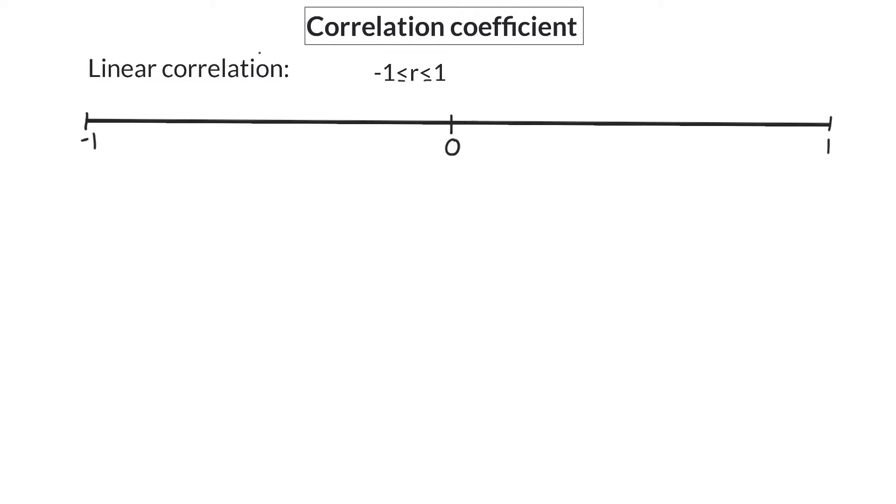The value will be negative if the gradient of the regression line is negative, and that means one variable will increase as the other one decreases. Similarly, the value will be positive if the gradient of the regression line is positive.